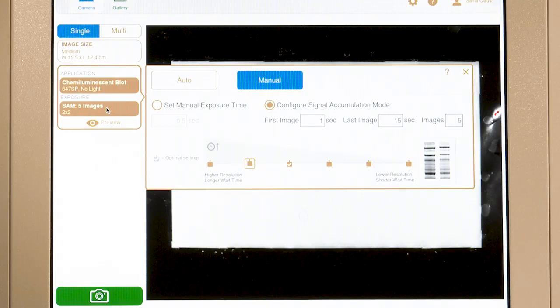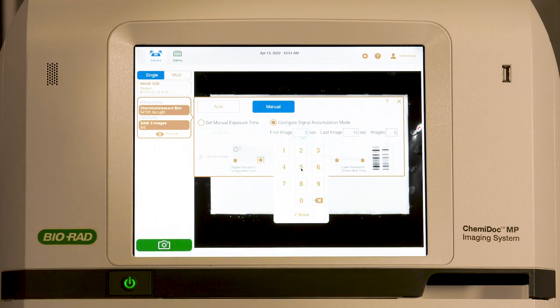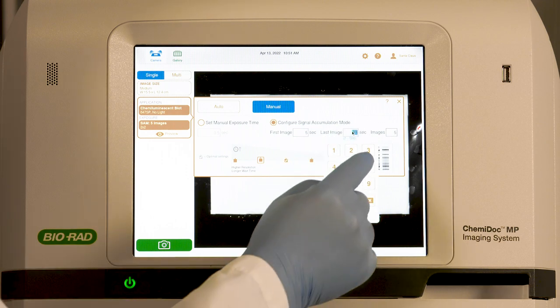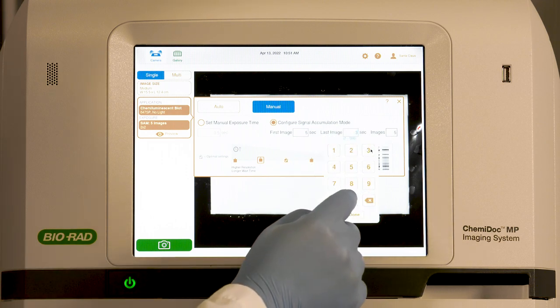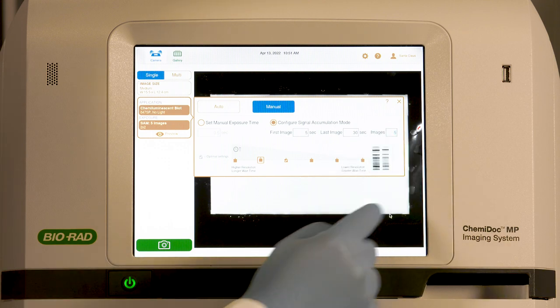To use signal accumulation mode, select the manual exposure setting. Estimate the shortest and longest exposure times that you want the system to acquire. Then enter the number of images that you want acquired during this interval.